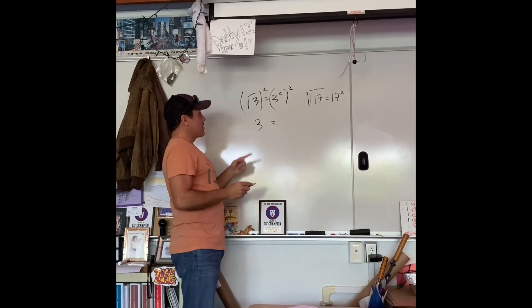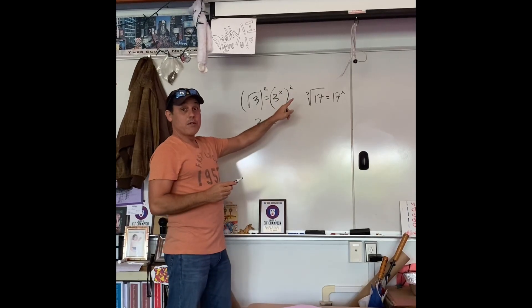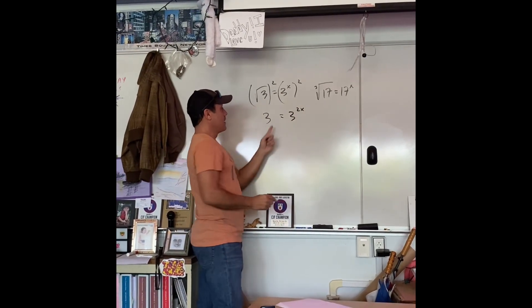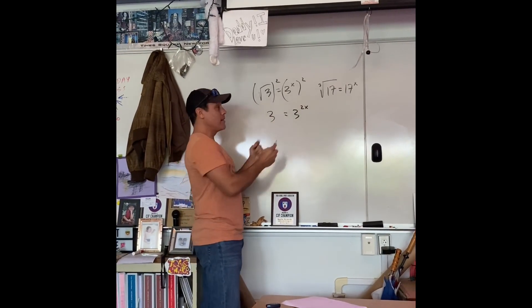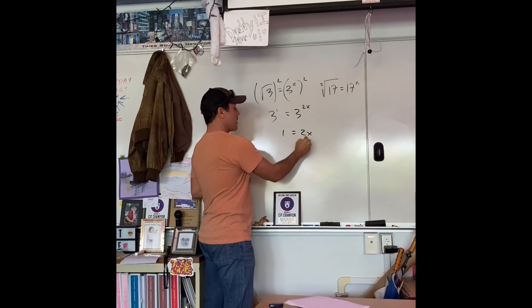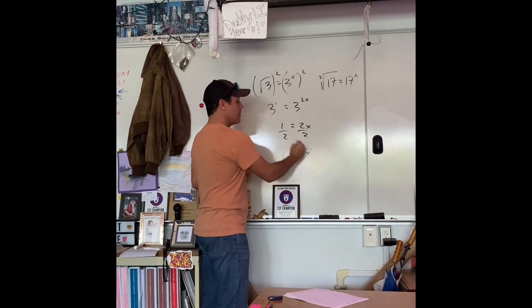Square in the square root gives us 3. Well, what is 3 to the x raised to the 2? Do you remember laws of exponents? When you raise to a power, you multiply the exponents, so we have 3 to the 2x. Do you remember what magical mystery number is here? That's right, 1. We have the same base, so 1 equals 2x. Divide both sides by 2. Bingo.